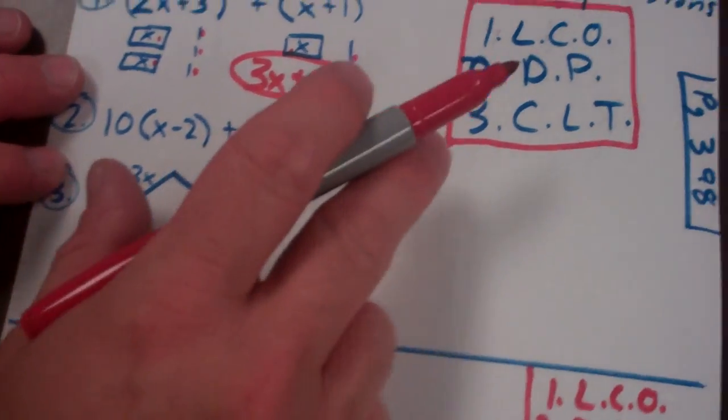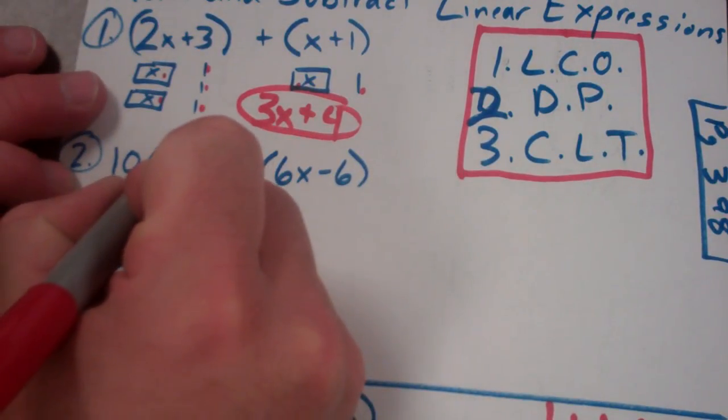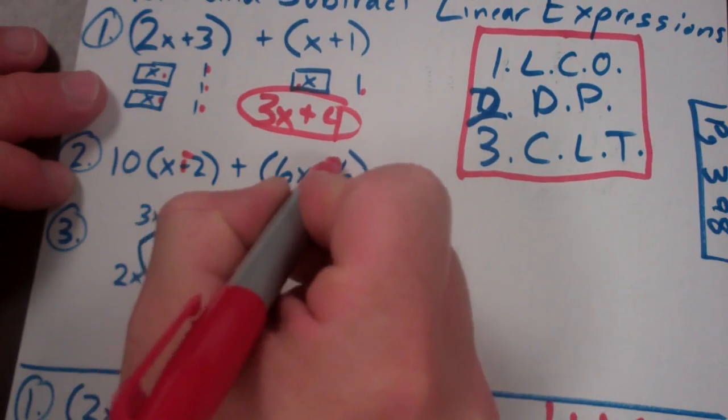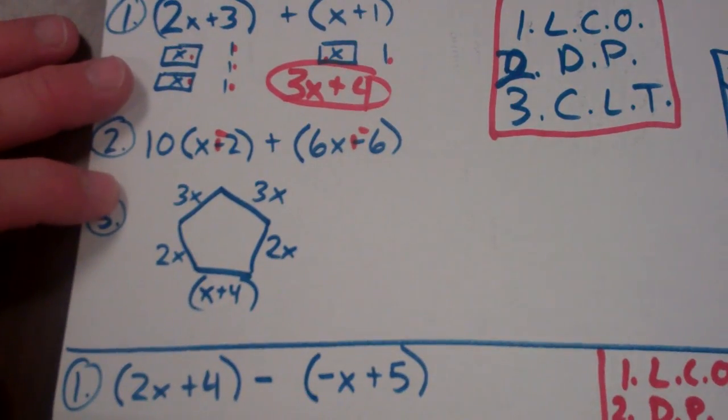That's one way to look at it is with a model. Another way to do it is by following these three steps. So let me do that this time. Leave change opposite. Leave change opposite.